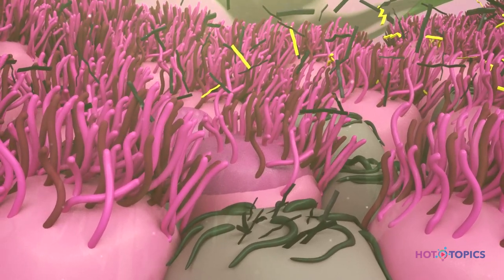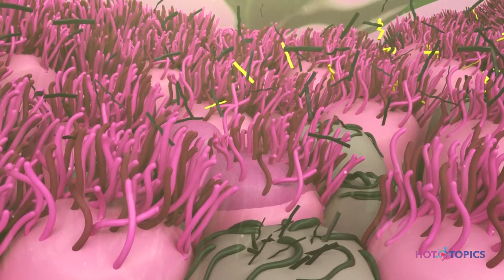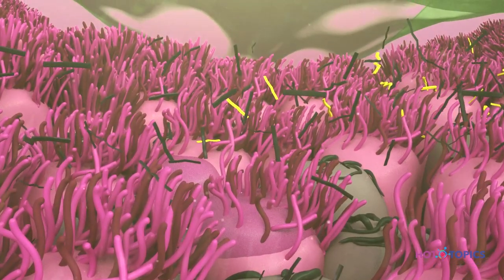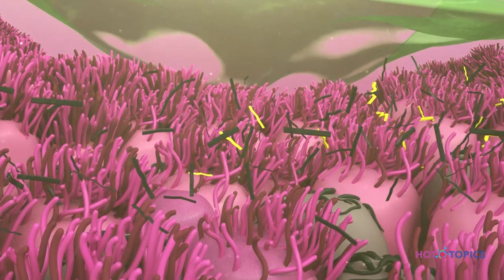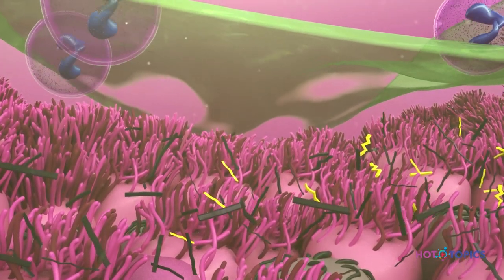The goblet cells produce excess mucins, especially MUC5AC, which remains tethered to the goblet cell surface, further inhibiting the ability of the cilia to propel mucus upwards and out of the airways.